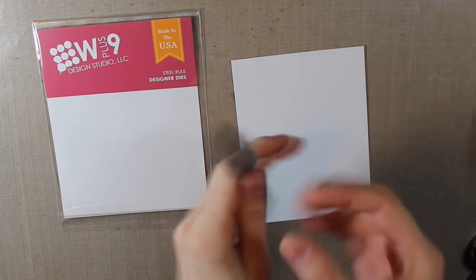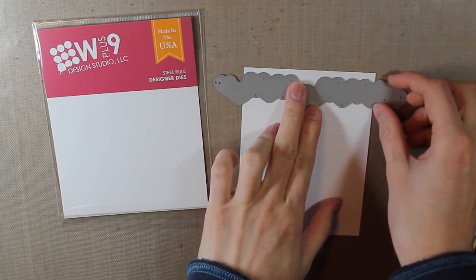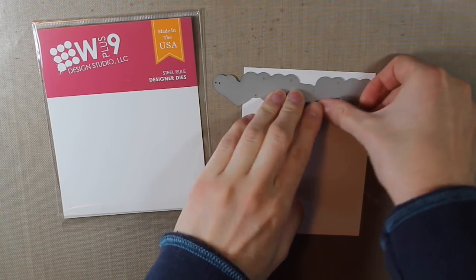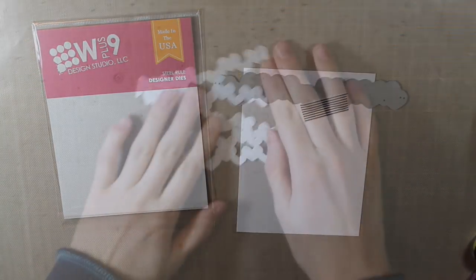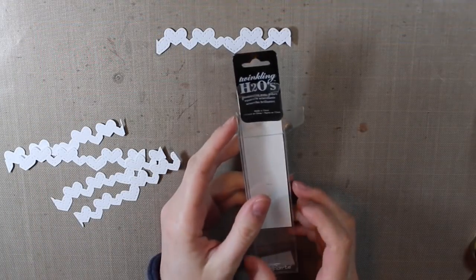Hello everyone and welcome back to my channel. I'm starting today's card by die cutting this W plus 9 heart border die five times out of a piece of white cardstock.